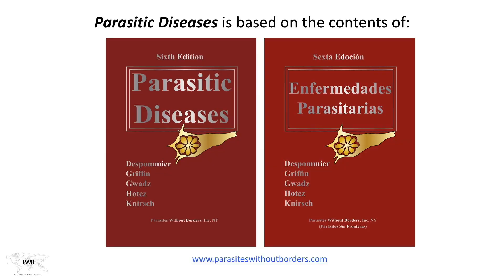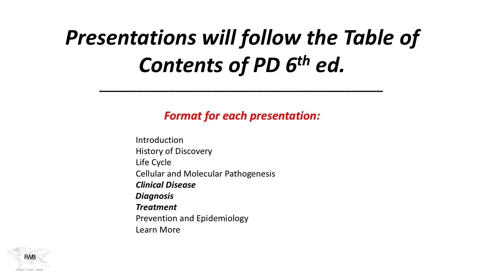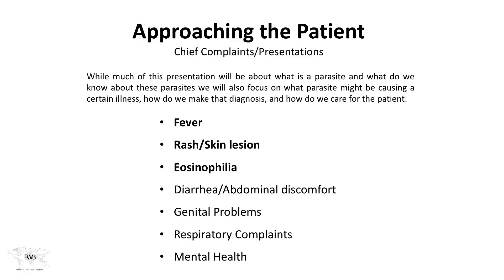The format, as Dr. Depomierre was presenting, will follow the same structure as our book: introduction, history, life cycle, and cellular and molecular pathogenesis. But when we get to clinical disease, diagnosis, and treatment, I'm going to jump in. We'll start with a clinical vignette. I'll point out key features, then move on to diagnosis, and finish with treatment. We'll return to Dr. Depomierre for prevention, epidemiology, and further resources. Even though you'll know the chapter topic, I'll encourage thinking about how we focus and make the diagnosis as a clinician would, breaking things down by chief complaints and different presentations.